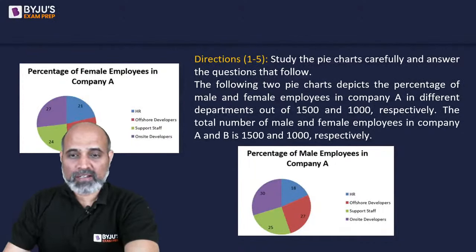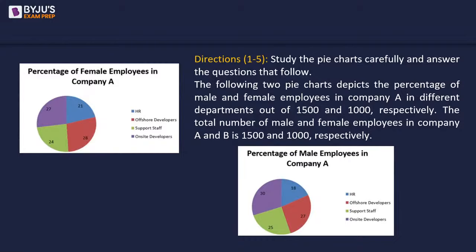Here is the first set. The following two pie charts depict the percentage of male and female employees in Company A in different departments. The total number of male and female employees in Company A is 1500 and 1000 respectively.